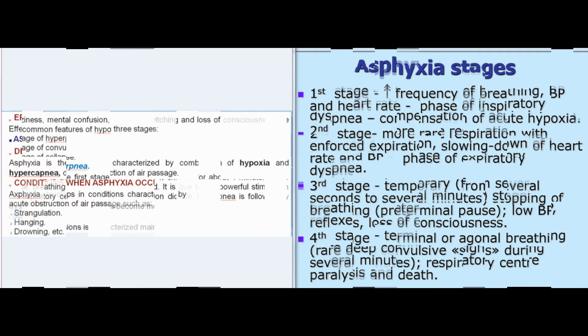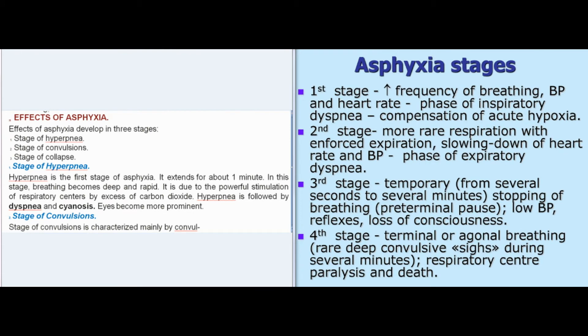Effects of asphyxia develop in three stages: the stage of hyperpnea, the stage of convulsions, and the stage of collapse. In the stage of hyperpnea — the first stage, extending for about one minute — breathing becomes deep and rapid due to powerful stimulation of respiratory centers by excess carbon dioxide. Hyperpnea is followed by dyspnea and cyanosis, and the eyes become more prominent.